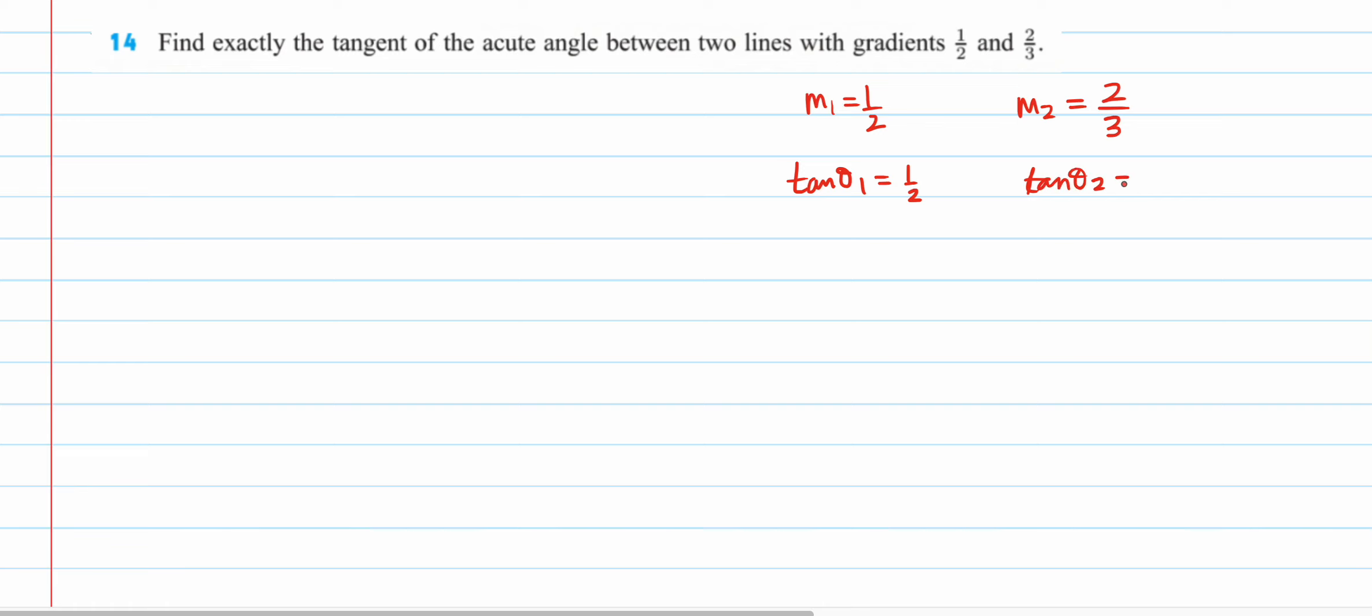That is a formula for slope of a line. So, whenever you have a line, and if this angle is theta, the slope of a line is given by tan theta, where theta is the angle with the x-axis. So, this is a formula of slope.